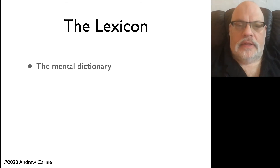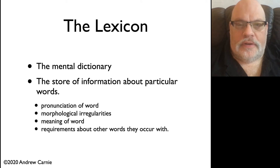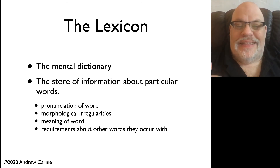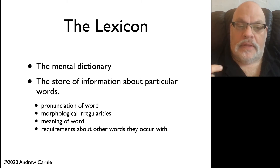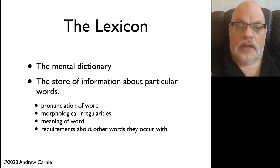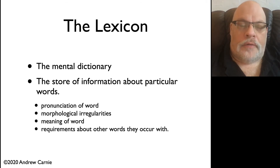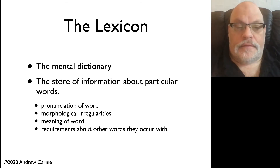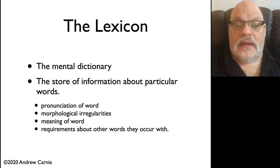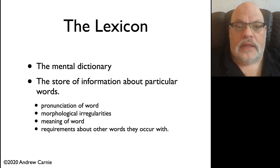The lexicon, which is your mental dictionary, contains some really important pieces of information. For each individual word, it contains unpredictable things. Our mental dictionary has to include the pronunciation of the word, any kinds of morphological irregularities — such as an irregular plural or irregular past tense — information about the meaning of the word, and critically, for our purposes, information about the requirements that word has on other words that appear with it in the sentence.